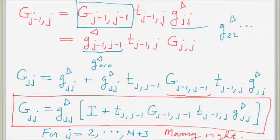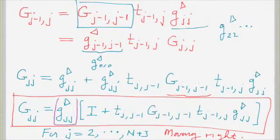We worked through the final numerical expressions for the algorithm, noting that to generate the block diagonal elements you need, as you walk your right-connected Green's function across the device, to store it away for every diagonal block because you reuse it again. So you need enough memory to store those blocks.